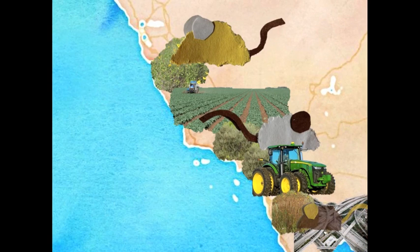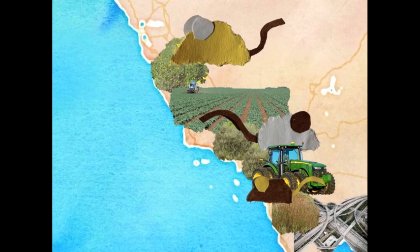The last known population of Pacific pocket mice was destroyed during development in 1971, and the species was thought to be extinct. However, more than 20 years later, Pacific pocket mice were rediscovered in Orange County.